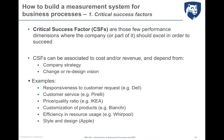Step one: identify the critical success factors of the business process and the company. Critical success factors are those performances on which the company wants to be recognized in the market and wants to gain competitive advantage. By definition, they must be driven by company strategy and can be associated with cost or revenue side — factors that indirectly affect cost or revenue streams.